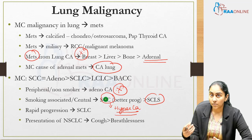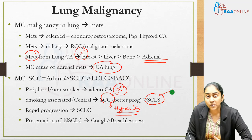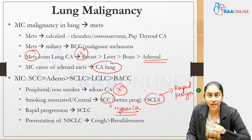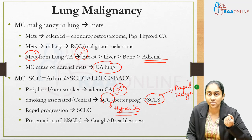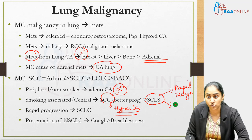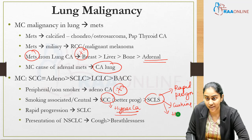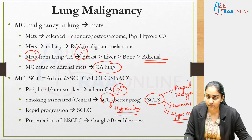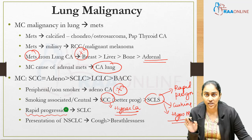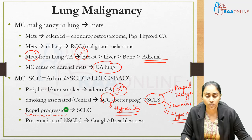A lung mass in a smoker with hypercalcemia points to squamous cell carcinoma. If a lung mass has very rapid progression — with a normal X-ray mentioned three months ago — plus other paraneoplastic syndromes such as ectopic ACTH (Cushing's) or hyponatraemia (SIADH), think small cell lung carcinoma (SCLC). Rapid progression of any lung tumour should make you think SCLC, which carries a very poor prognosis.